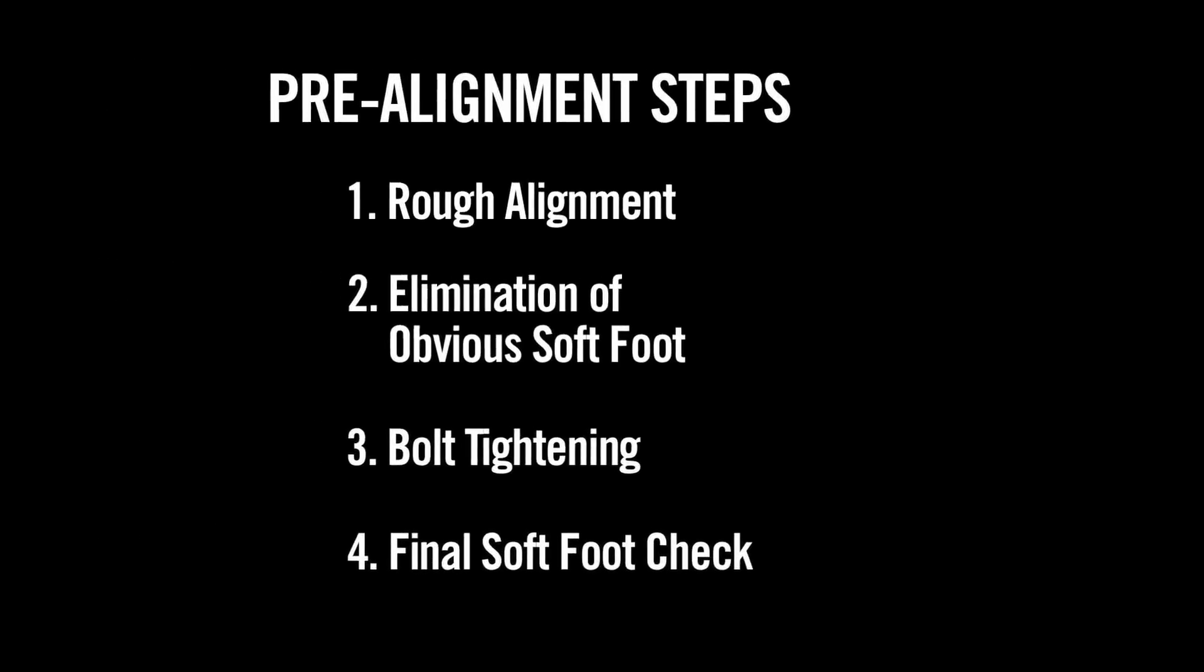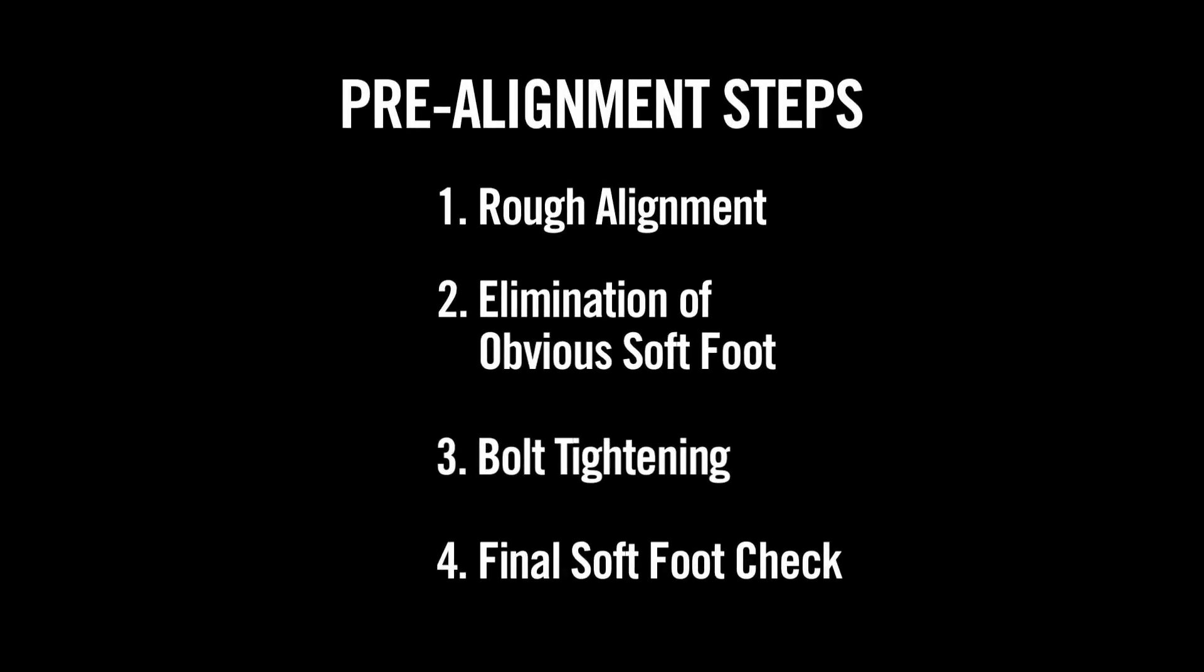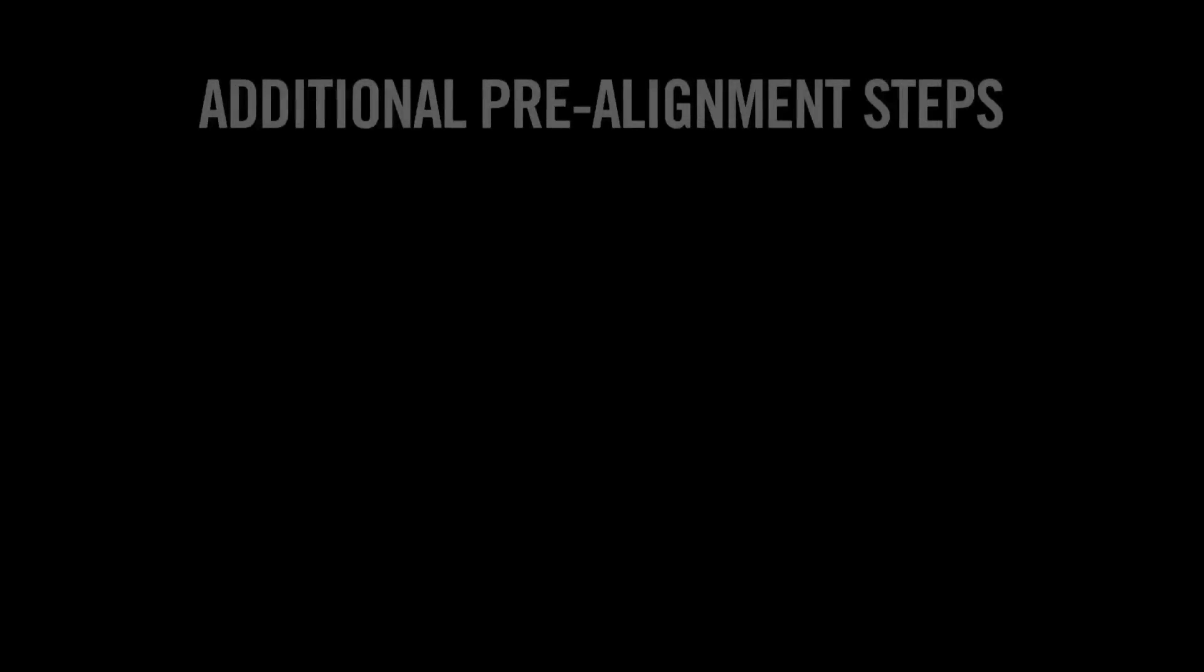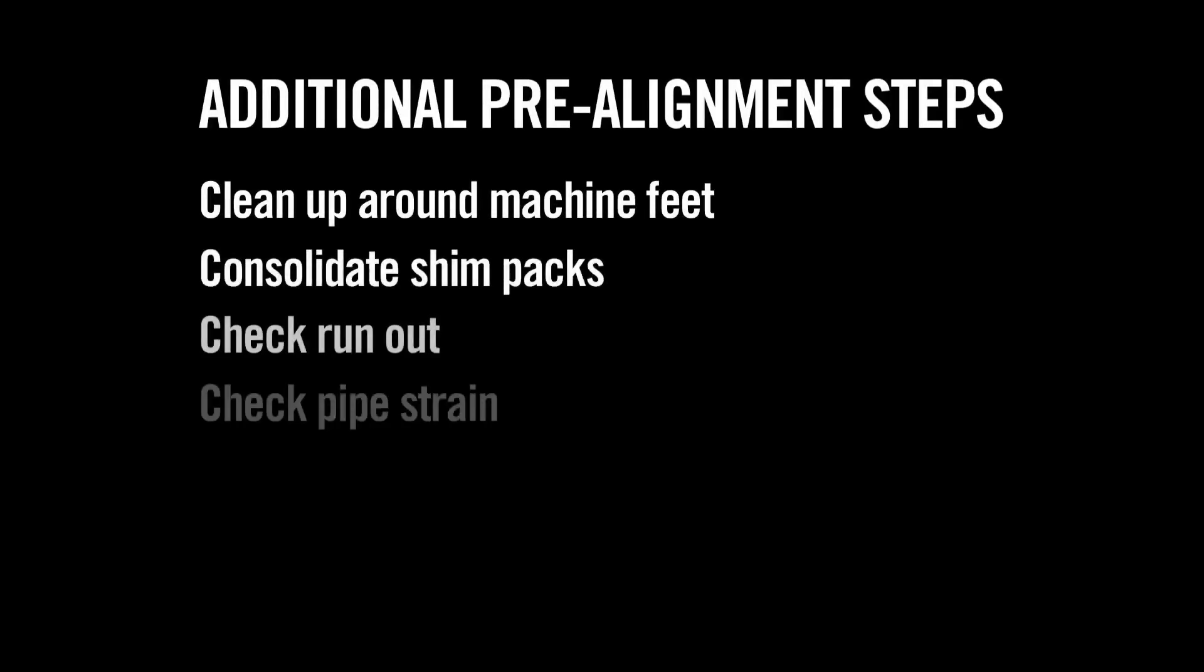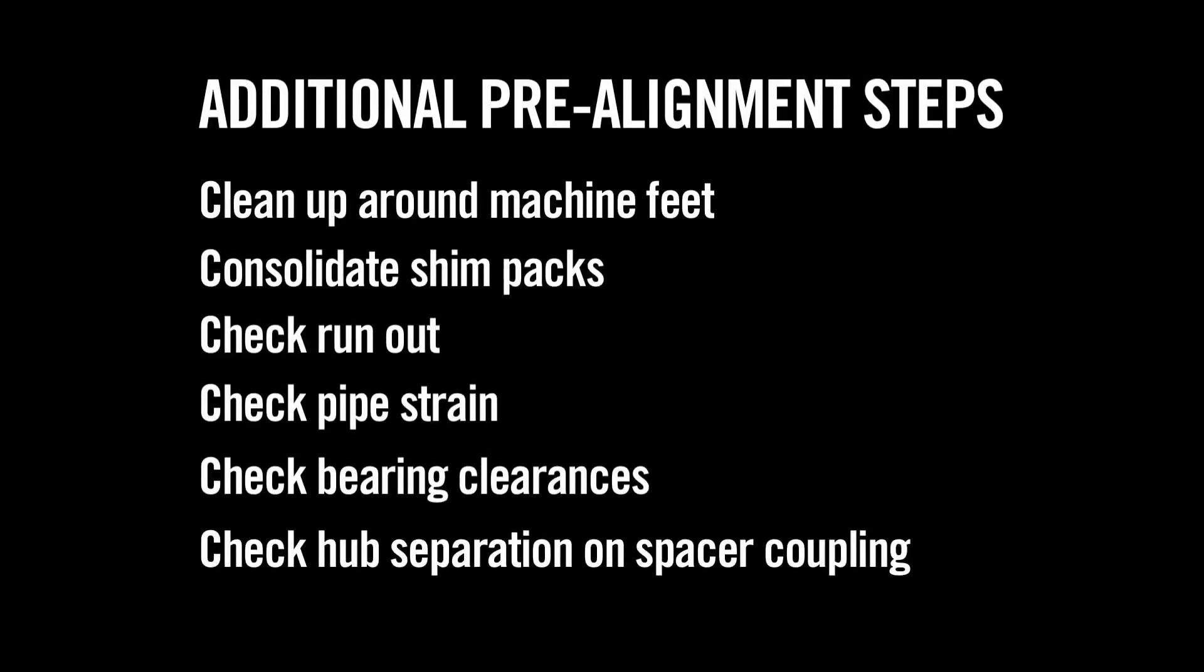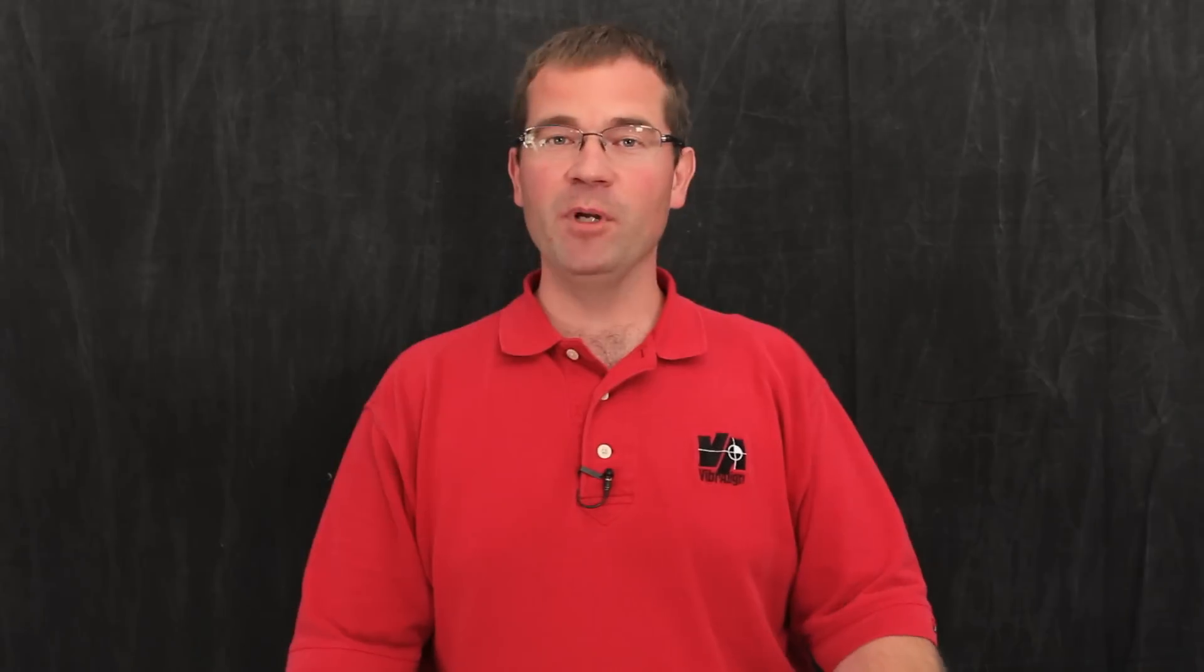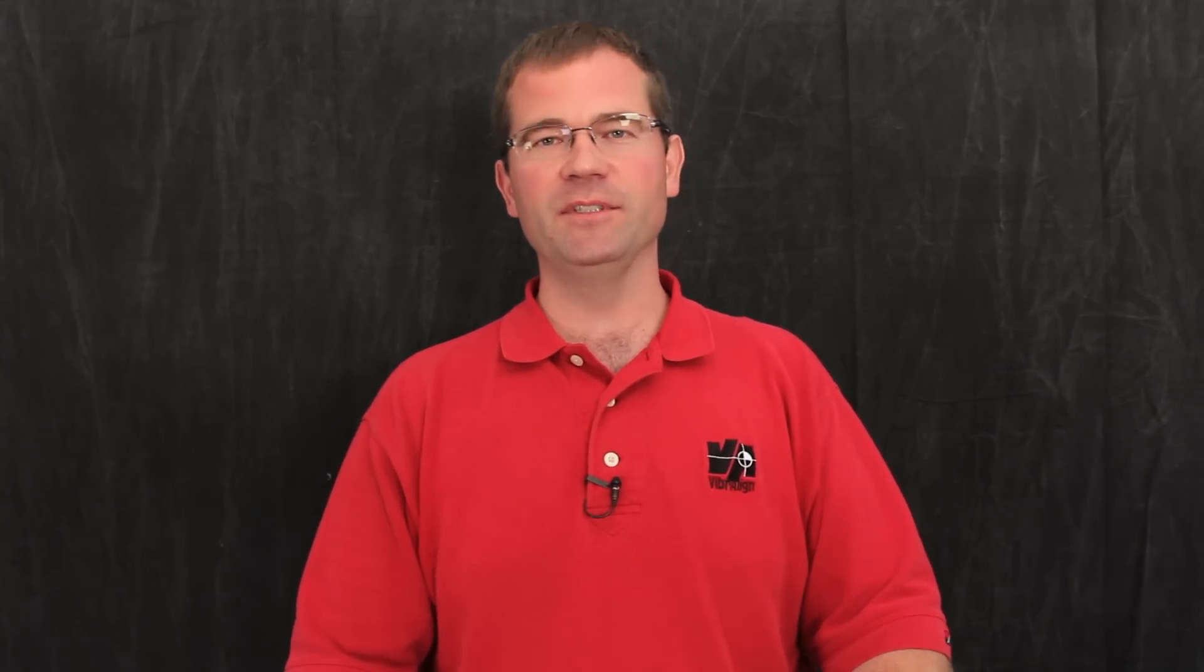Now we have completed the four pre-alignment steps. From this point forward, we shouldn't have unintended movement during the more precise steps of shaft alignment. And remember, these four pre-alignment steps are essential whether you're using a dial indicator system or a laser alignment system.